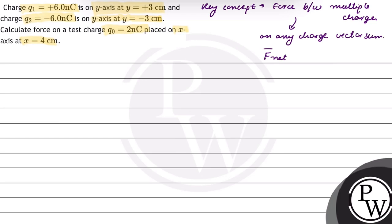So F net vector will be the vector sum of forces experienced by the charge due to other charges. Is case mein, hame given hain two charges Q1 and Q2 placed at a distance of 3 cm from the origin on both sides. Q1 and Q2 are plus 6 nanocoulomb and minus 6 nanocoulomb respectively.